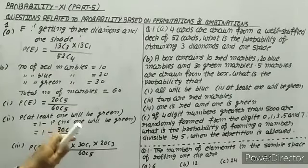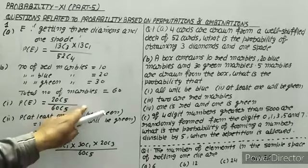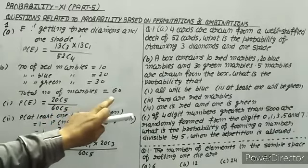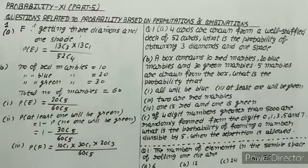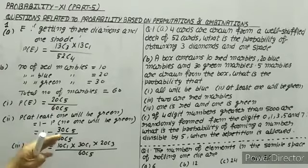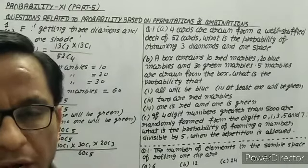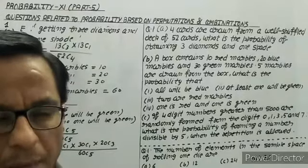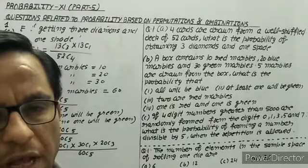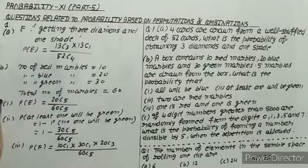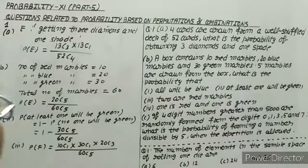You have to do the calculation to get the correct answer. Remember: NCR = N! / (R! × (N−R)!). Using this formula, we solve the combination parts.